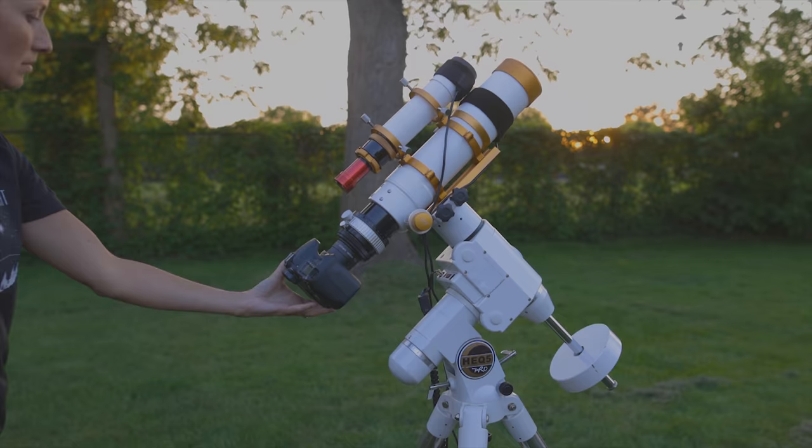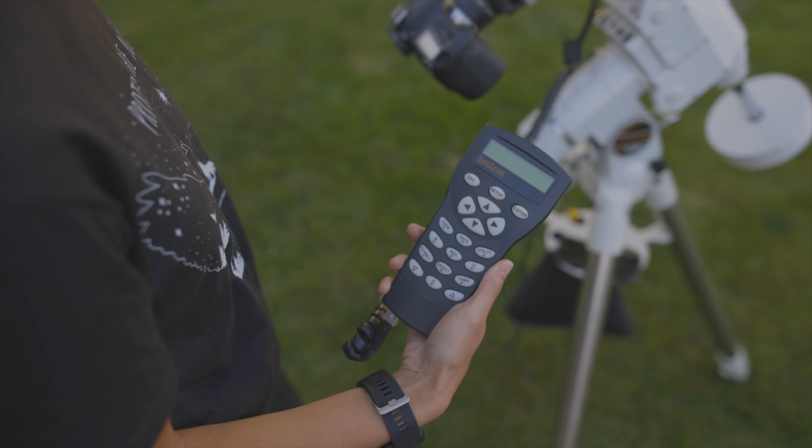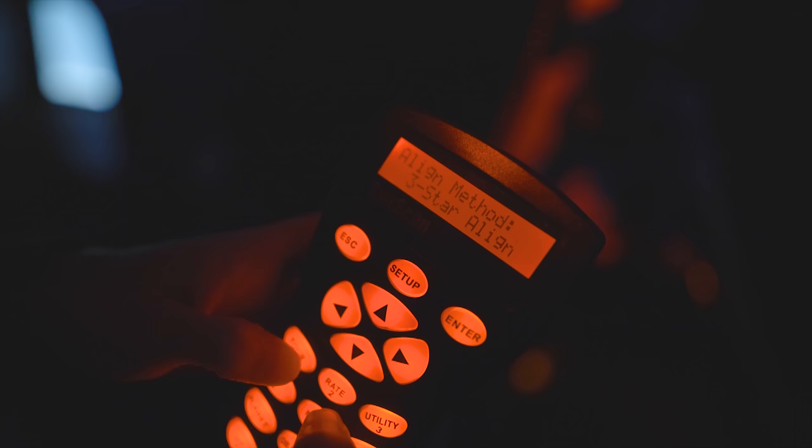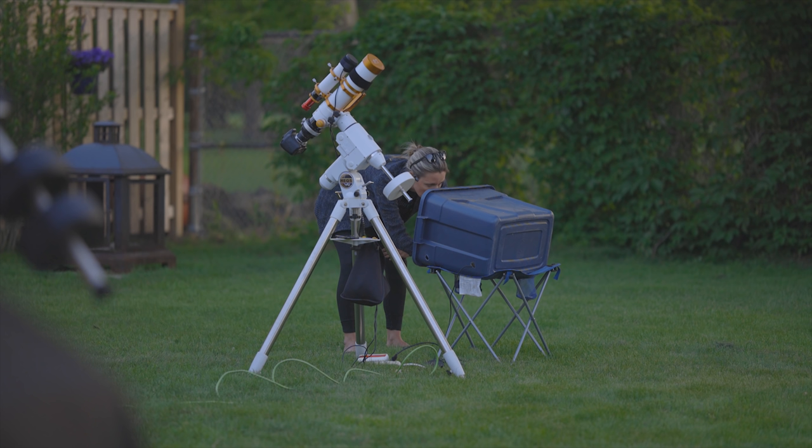The telescope mount is a computerized go-to mount. Ashley's holding up the hand controller there. We'll use this for the star alignment routine as well as slewing over to our deep space objects when we're ready.